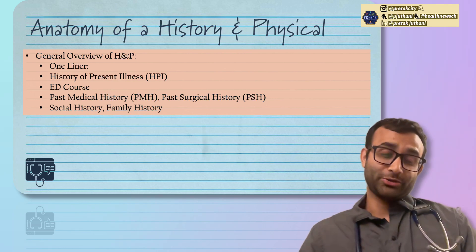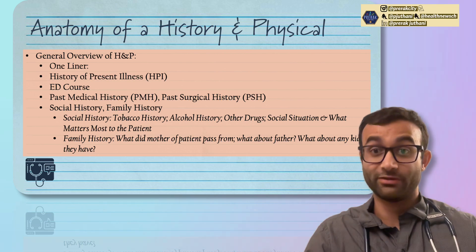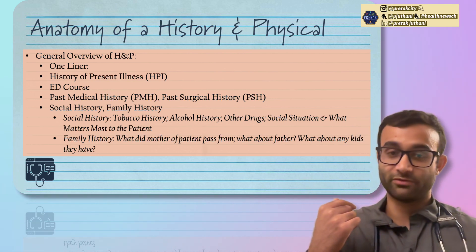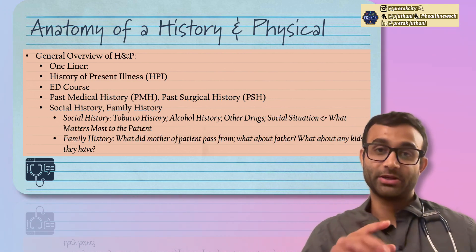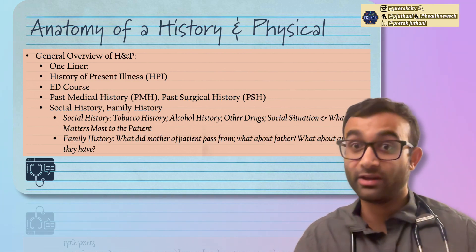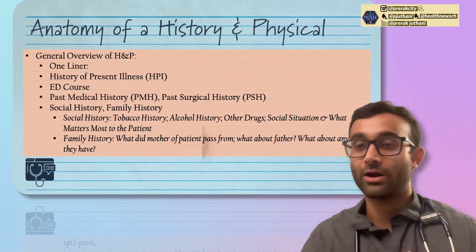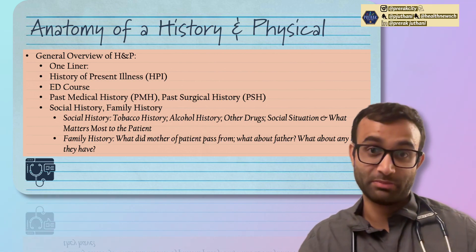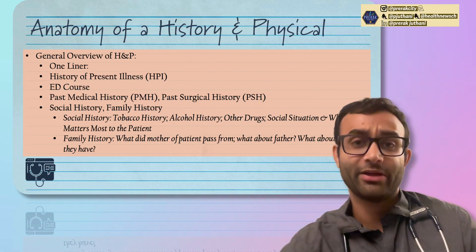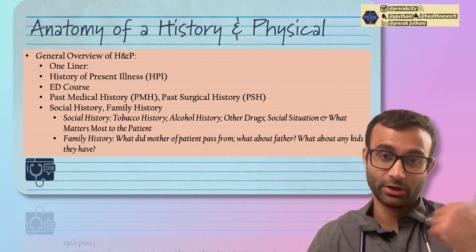Next you have the social history and family history. Family history is fairly simple — if someone's coming in with chest pain, ask if there's a family history of heart disease. Social history is fascinating because there are so many parts to it: do they drink alcohol, tobacco use, social situation, where do they live? So much of our patients' lives extends beyond what they have medically. Where and how they live has a big bearing on how they approach healthcare, and whether they have someone to help with their medications is a big deal.